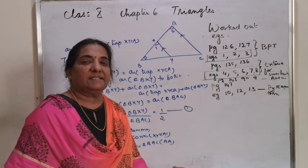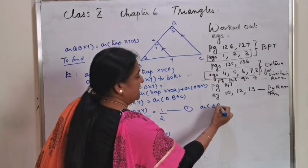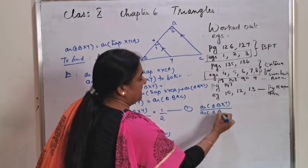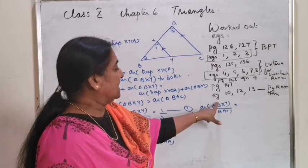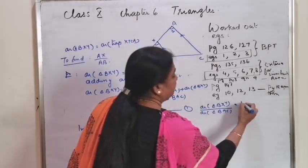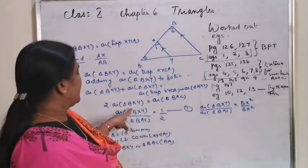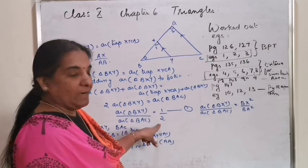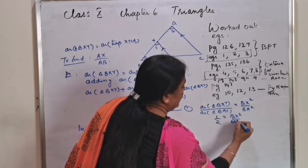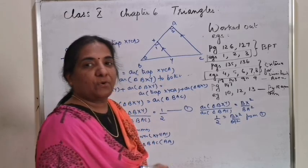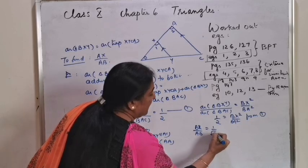Once the triangles are similar, apply the area theorem: area(BXY) by area(BAC) equals BX² by BA². From equation 1, this equals 1 by 2. Therefore BX² by BA² equals 1 by 2, so BX by AB equals 1 by √2.